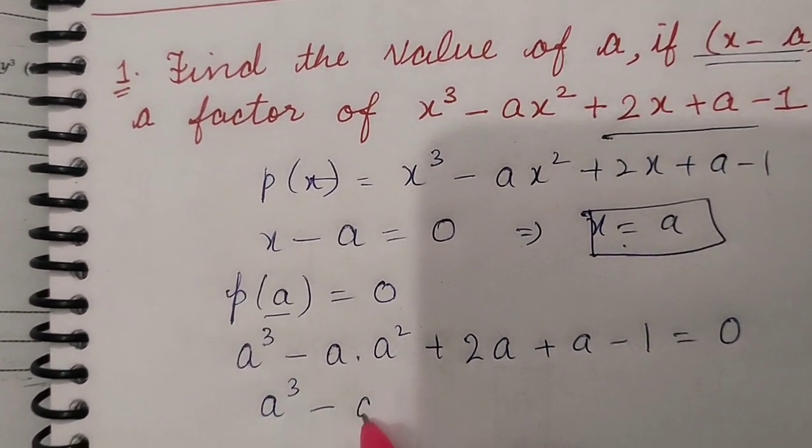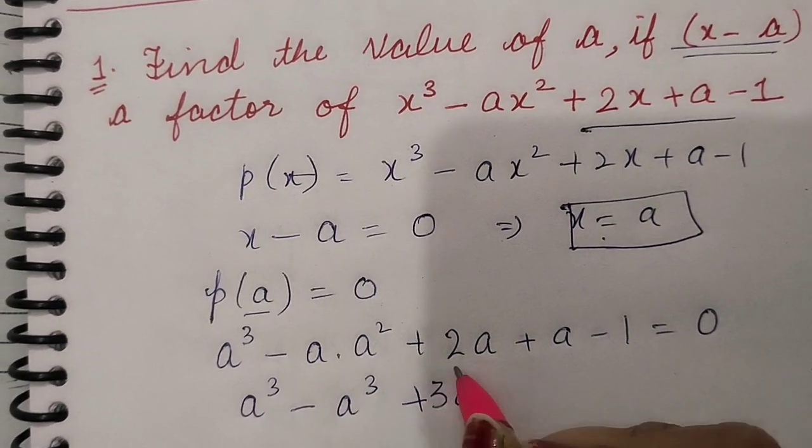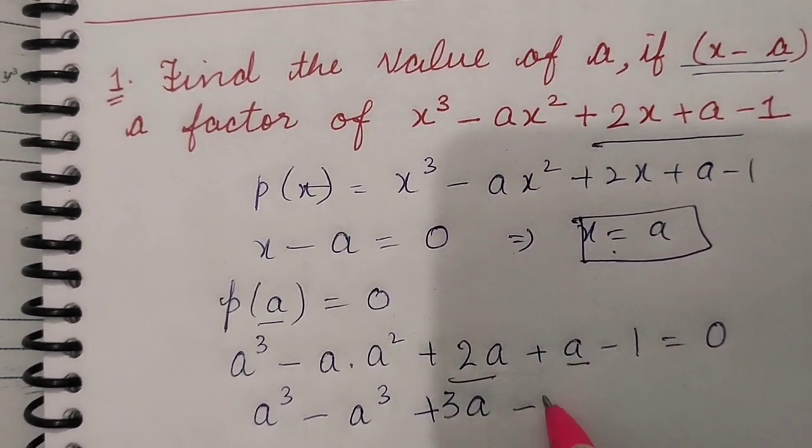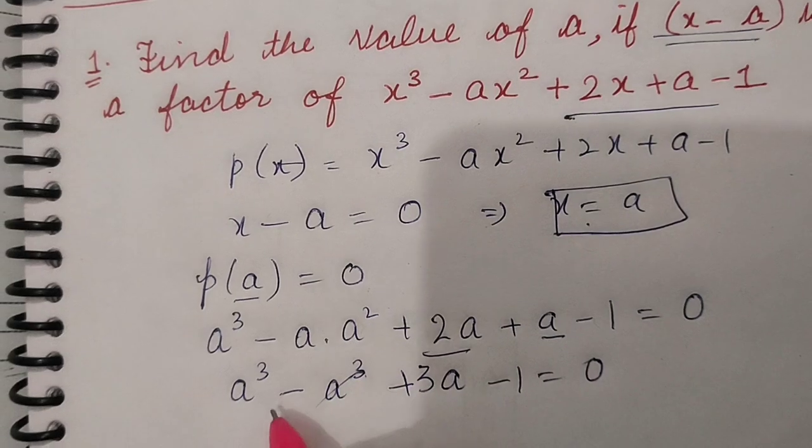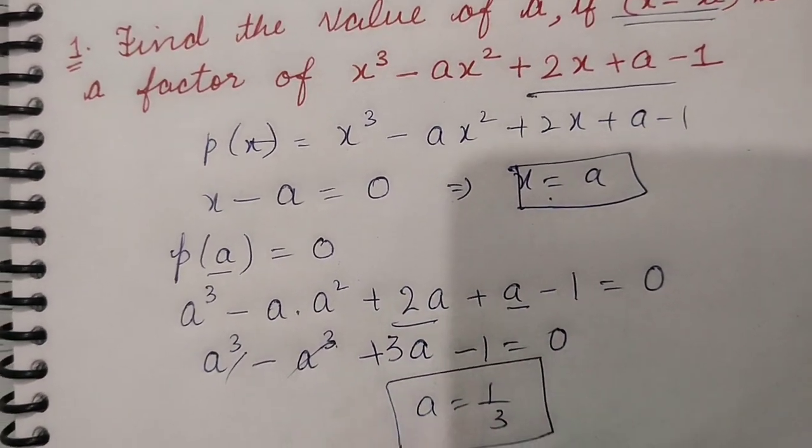So what is it? It is a³ - a³ + 2a + a - 1 = 0, that is 3a - 1 = 0, and as a result you are able to say that a is equal to 1/3 in this question.